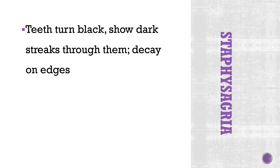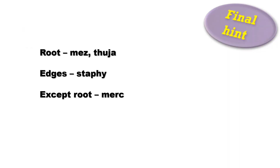In Staphysagria, decay on the edges only. So the final hint: if the root is decayed, think of Mezereum and Thuja. If the edges are decayed, go for Staphysagria. If parts except the roots are decayed, think of Mercurius. That's all, thank you.